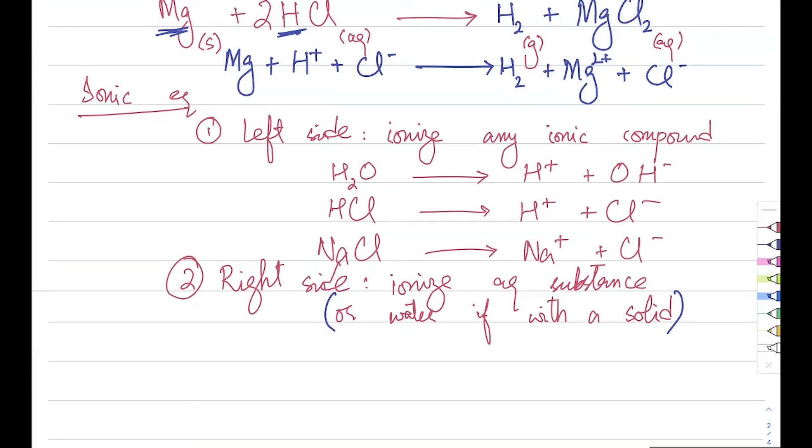So that's why we cancel them out. They are not important for our reactions. Chloride goes away. I'm left with simply magnesium plus H positive making hydrogen plus magnesium ion, and I'll balance it, and that's my ionic equation.